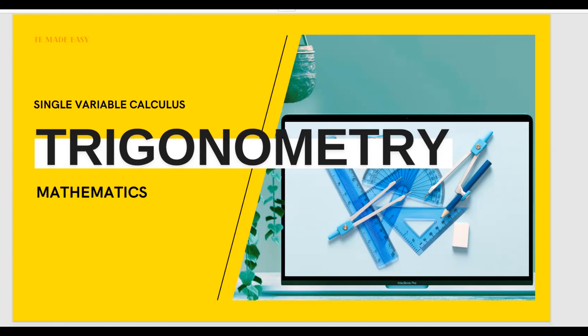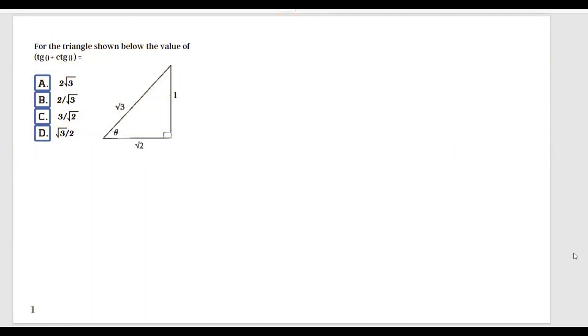Now let's move on with the example for today. For the triangle shown below, the value of tangent of theta plus cotangent of theta equals...